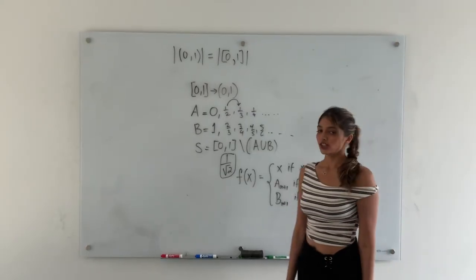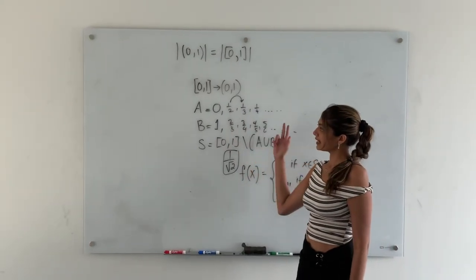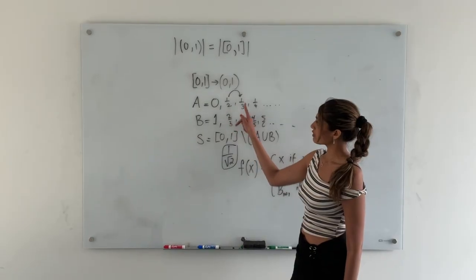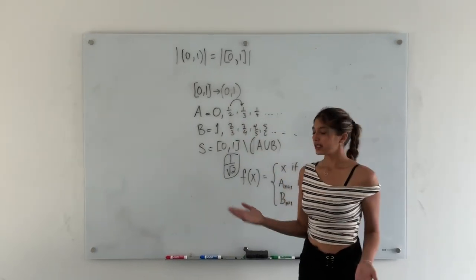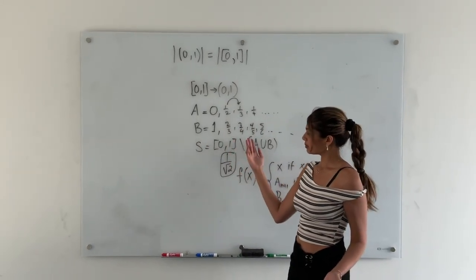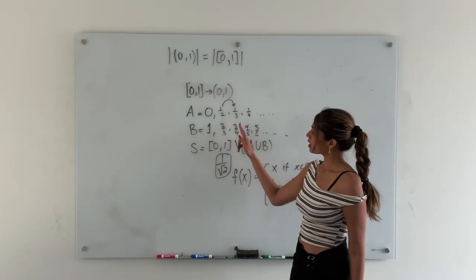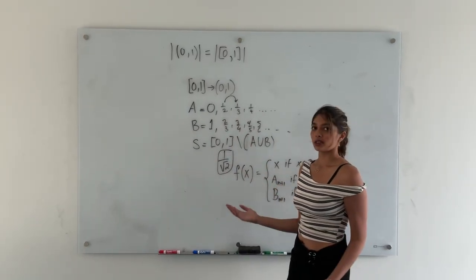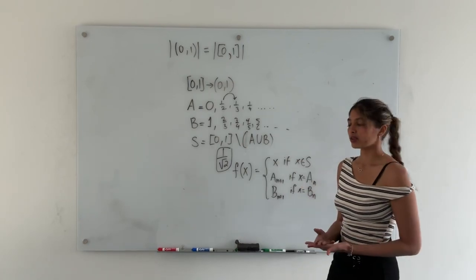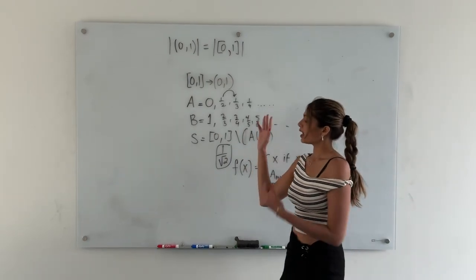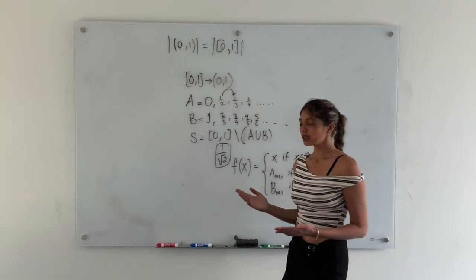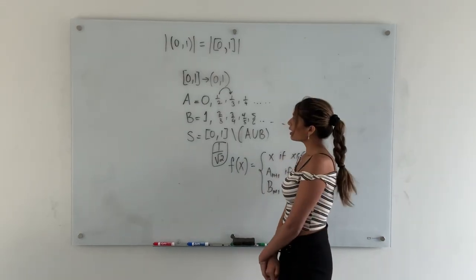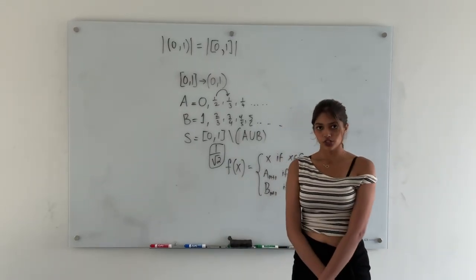This function is injective because every element in a is mapped to another unique element in a. So 0 is mapped to 1/2, 1/2 is mapped to 1/3. Similarly, every element in b is mapped to another element in b: 1 is mapped to 2/3, 2/3 is mapped to 3/4. And every element in s is mapped to itself. Since a, b, and s are disjoint, they all have a unique mapping. Hence the function is also injective.